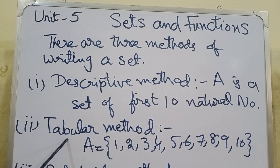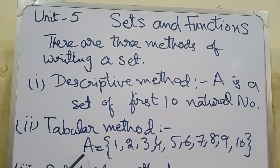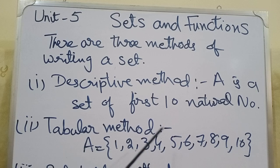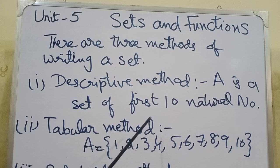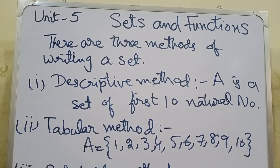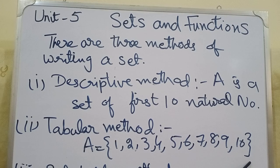The second method is the Tabular method. This method shows us all the elements physically appearing in the form of a group. For example: Set A = {1, 2, 3, 4, 5, ... up to 10}. It means all the first 10 natural numbers are members of set A, and we write them as they appear. The tabular form indicates its description by listing elements inside brackets.